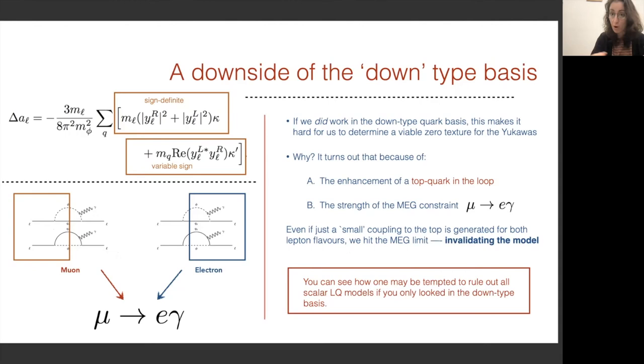In this case, if we look at the downtype quark basis and imagine that we were working in this basis trying to do a calculation of the contribution to g-2, if we did work in this basis, it makes it very hard for us to determine viable textures for the Yukawas. The reason is because of this constraint mu-2-e-gamma. Because the top quark in the loop and the strength of mu-2-e-gamma constraints means that if we were to generate any sort of coupling to the top quark for both the muon and the electron, then the coupling with the top quark would immediately generate a contribution to mu-2-e-gamma, which again would be chirally enhanced. You can think about this as cutting off the side of the muon interaction, cutting off the other side of the electron interaction, and sticking them together to form mu-2-e-gamma.